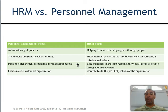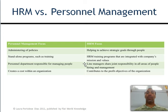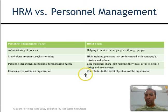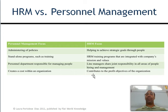In Personnel Management, the Personnel Department is solely responsible for managing people. In Human Resource Management, line managers share joint responsibility in all areas of hiring and people management — you are involved in the interviewing process as a primary component. Personnel Management creates a cost within an organization, not really adding value. Human Resource Management contributes to the profit objectives of the organization — when HR is aligned with company goals, they can relay those goals into recruiting and hiring, making a better fit and making it more profitable.